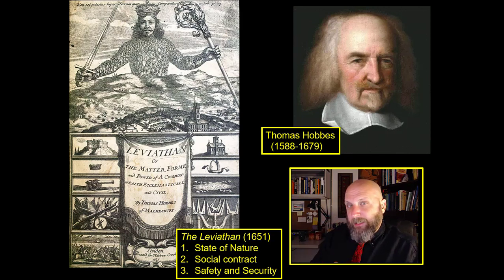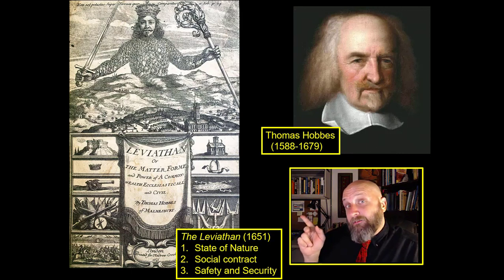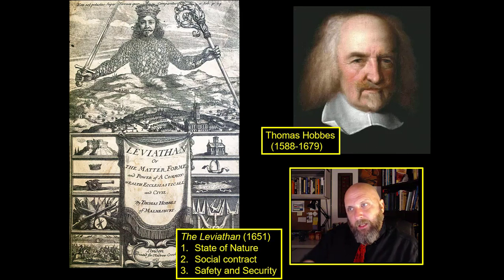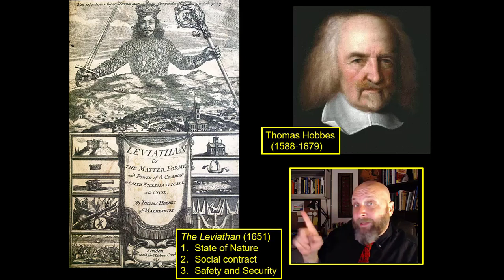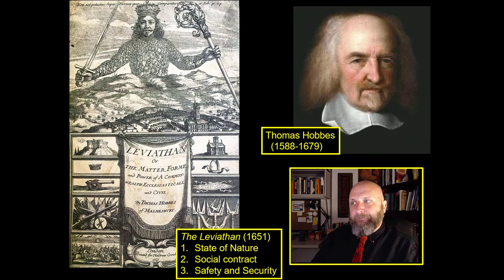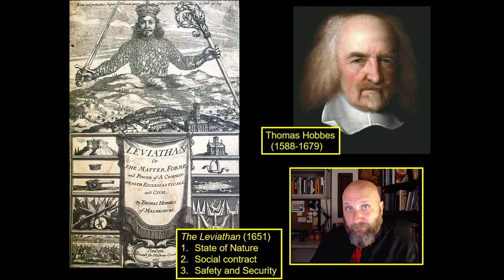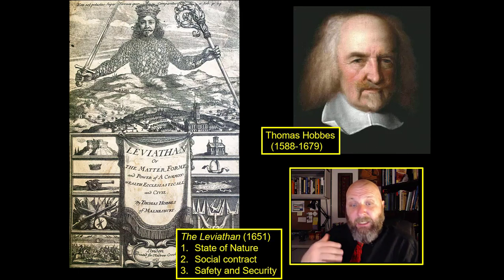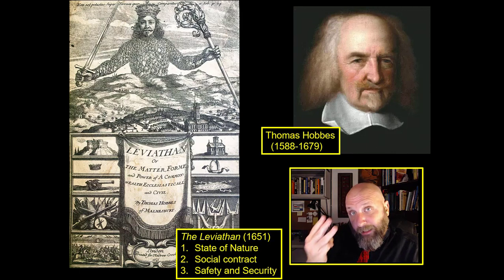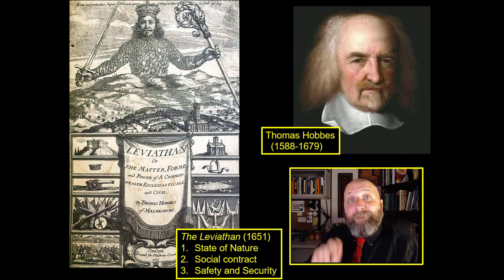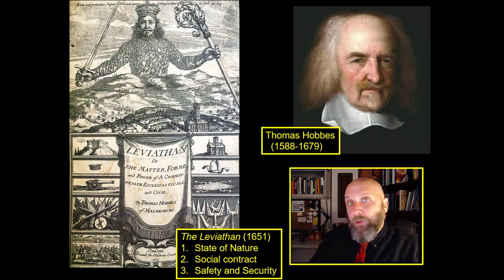There is a solution, Thomas Hobbes says — the Leviathan. This monster appears, and humans enter into a social contract with it. The monster says you are going to surrender a lot of your personal freedom and give the Leviathan tremendous power over you. And in return, the Leviathan will keep you safe from your fellow people. The Leviathan will deliver safety and security, and the more power and wealth you give it, the greater its ability to keep you safe and secure.